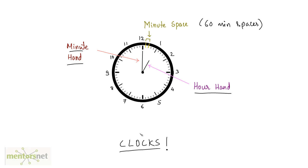If I ask you what is the current time shown on this clock, your answer should be 1 o'clock. Why? Because the hour hand is pointing towards 1 and the minute hand is pointing towards 12, which means there are 0 minutes and 1 hour — so, 1 o'clock.